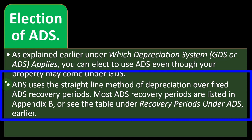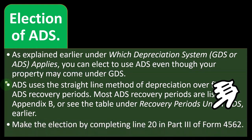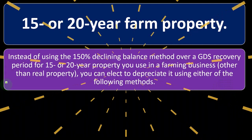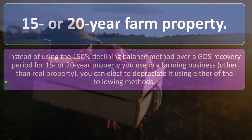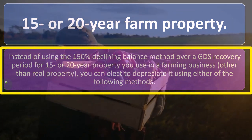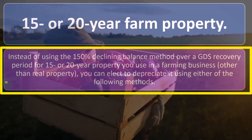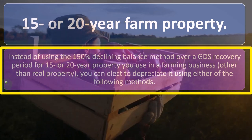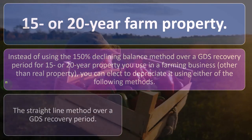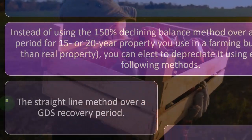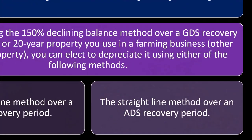ADS uses the straight-line method of depreciation over fixed ADS recovery periods. Most ADS recovery periods are listed in appendix B. Make the ADS election by completing line 20 in part three of Form 4562. For 15 or 20-year farm property used in a farming business other than real property, instead of using the 150% declining balance method over the GDS recovery period, you can elect to depreciate it using either the straight-line method over the GDS recovery period or the straight-line method over an ADS recovery period.